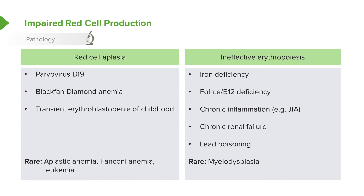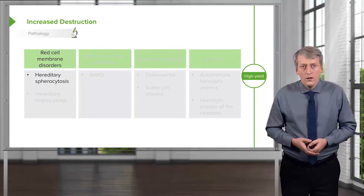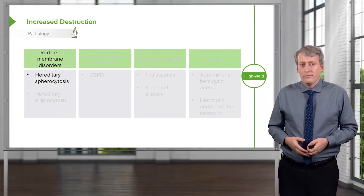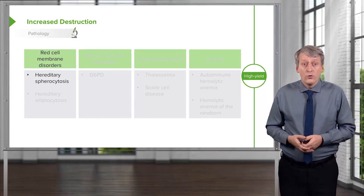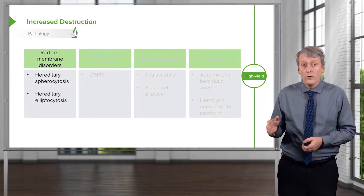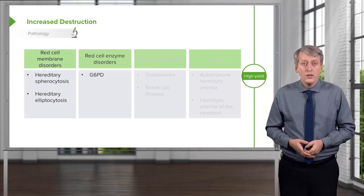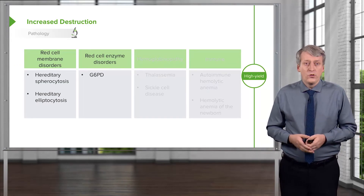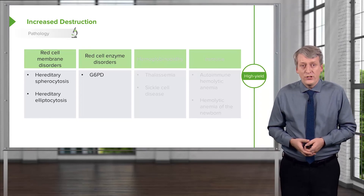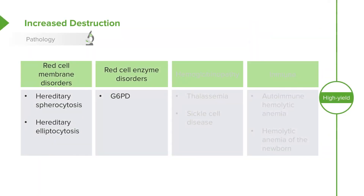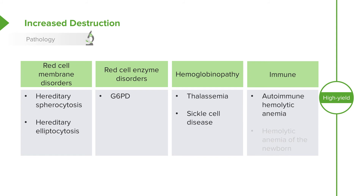Very rarely, patients may have a myelodysplastic syndrome. In the category of increased destruction, there are red cell membrane disorders like hereditary spherocytosis or hereditary elliptocytosis, red cell enzyme disorders like glucose-6-phosphate dehydrogenase deficiency causing uncontrolled oxidative stress, hemoglobinopathies such as thalassemia or sickle cell disease, or autoimmune attacks on red blood cells such as autoimmune hemolytic anemia or hemolytic anemia of the newborn.